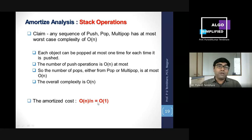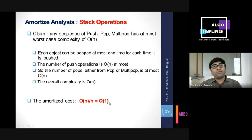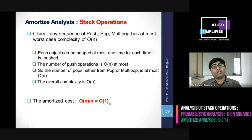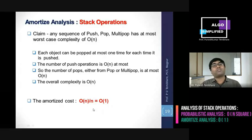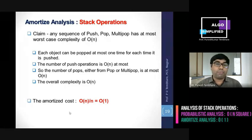So remember: when we perform stack operations using probabilistic analysis, the complexity is O(n²), but using amortized analysis the complexity is O(n). This is how we perform amortized analysis for stack operations.